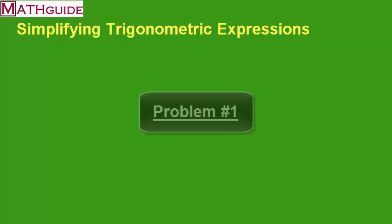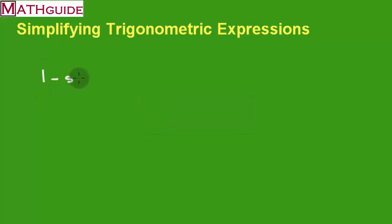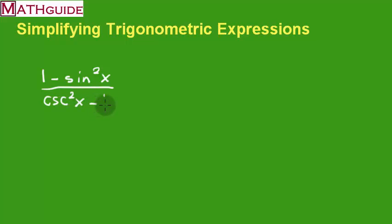So all these problems begin with some type of trigonometric expression. I'm going to start off with a relatively easy one, and then I'm going to ramp up the difficulty and get to problems that are a little bit more difficult. Usually what happens is on a test, quiz, or assignment in a trigonometry class, you're given this expression, and your job is to clean it up — to make it as simple and as condensed as possible.